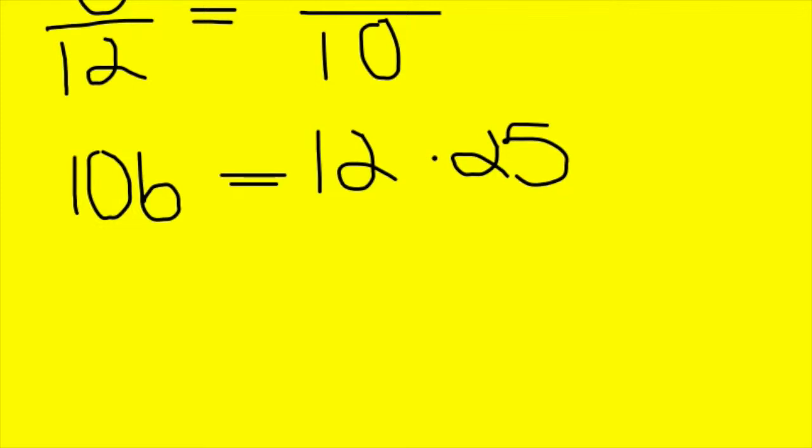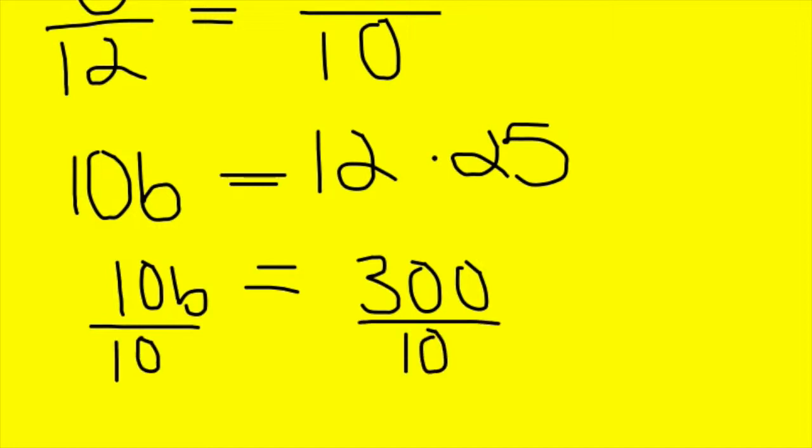Put our equal sign and then we'll say 12 times 25. 12 times 25 ends up being 300. We still have 10b over here. Now we need to get b by itself so we're going to get rid of this 10. The only way we can do this is doing the inverse of what math it's doing. Since the 10 is next to the b, it is doing multiplication. The inverse of multiplication is division. So we're going to divide both sides by 10. This equals 1 so b is left and then you have 300 divided by 10 which is just removing one zero. You have 30. There's your answer.